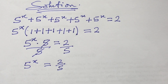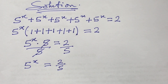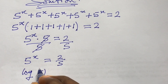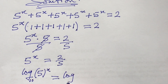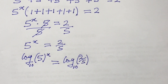We're looking for x and x is appearing as an exponent. There are two methods we can apply: we can either take the natural log of both sides, or we take log base 10 of both sides. Let's take log base 10 of both sides, giving us log base 10 of (5^x) equal to log base 10 of (2/5).